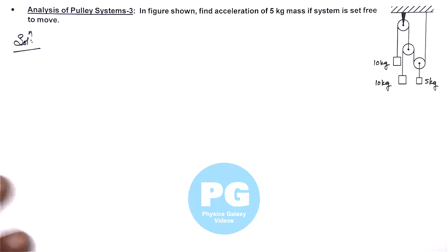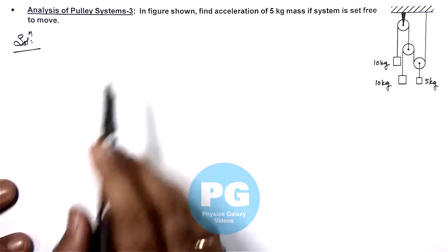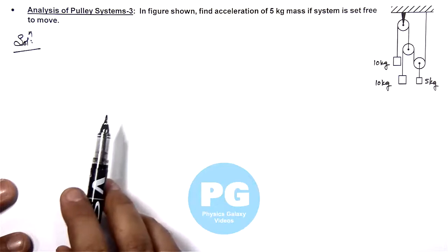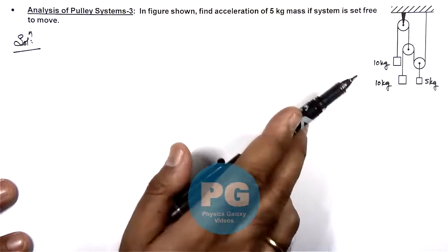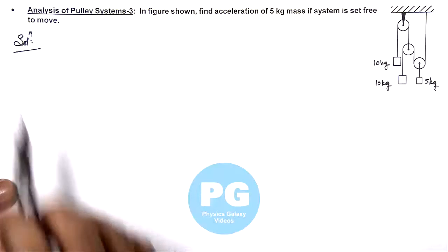In this illustration we are going to analyze another pulley system, a few we have already discussed. Here we are given that in the figure shown we are required to find acceleration of this 5 kg mass if system is set free to move.